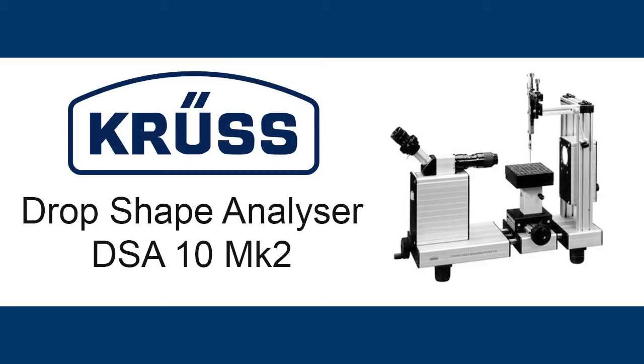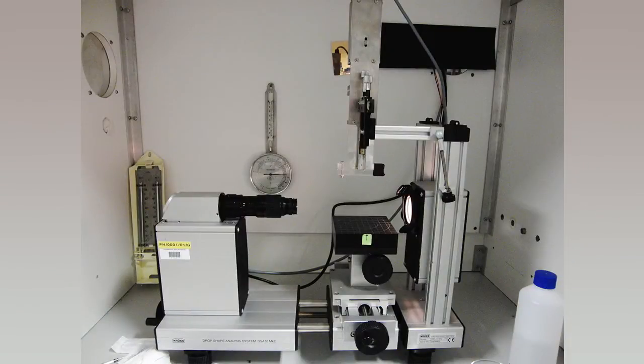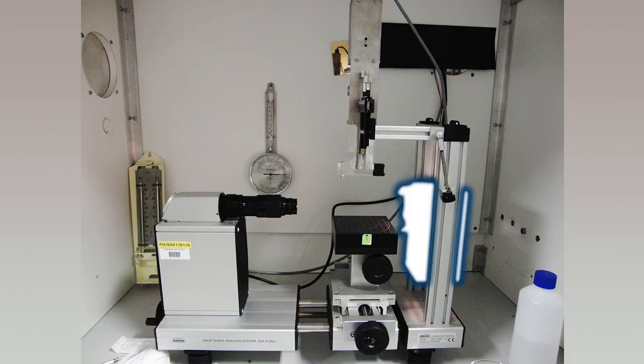This video will discuss the use of the CRUSD DSA 10 Mk2. The DSA has four main components: the camera, the stage, the syringe control mechanism, and the backlight.